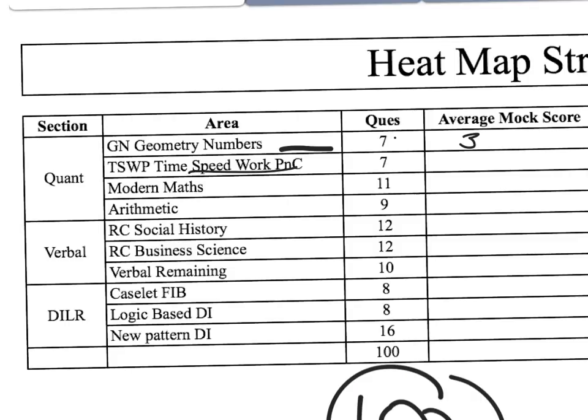How much are you scoring in each section? For example, out of 7 questions in Numbers and Geometry, you are scoring 3. In Time, Speed, Distance, PnC, Probability, and Time and Work — combined 7 questions — I am scoring 2. Modern Maths has 11 questions and is the main section of the CAT paper. Out of 11 questions, you are scoring 4. I am just giving a random break-up example.